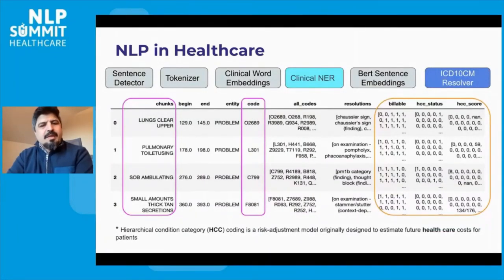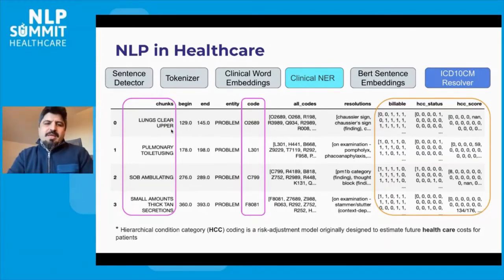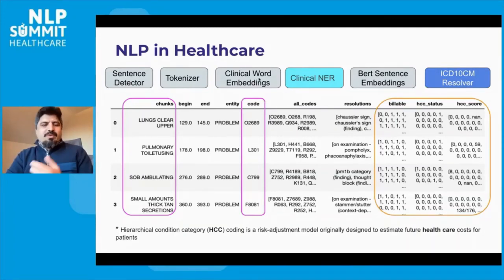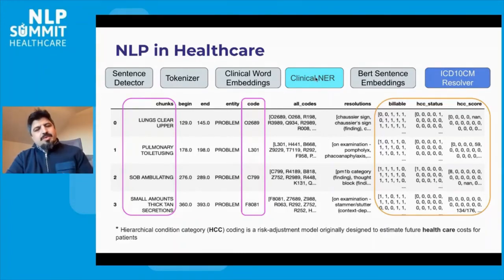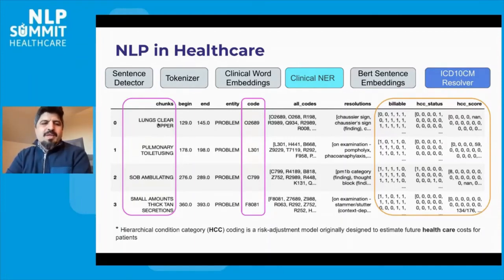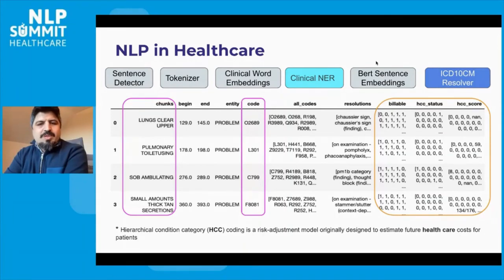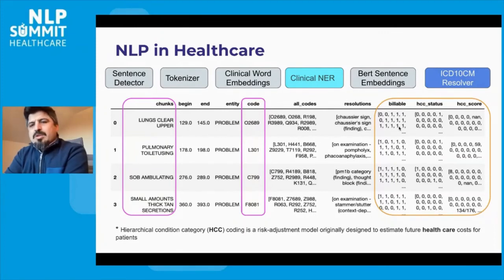Now let me talk about how we build such a pipeline in Spark NLP, combining all these tools into one single pipeline. We feed a text, and the NLP pipeline extracts sentences, then tokens, then using transfer learning from different embeddings, we assign embeddings to each token, and feed this information to clinical NER models. The NER algorithms find what makes a chunk a problem or test entity. Using this, we feed the chunk to BERT sentence embeddings, which is state-of-the-art contextual embeddings, to find the contextual representation of the chunk and end up with ICD-10 or SNOMED code resolutions. We extract not just the code, but also the billable status and HCC status, since each ICD-10 code is already mapped to billable codes or HCC status.